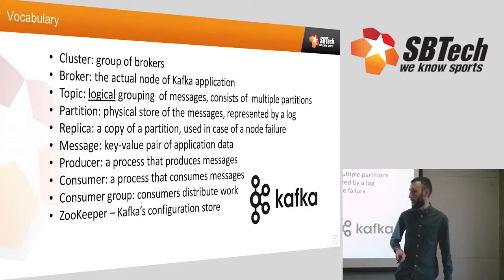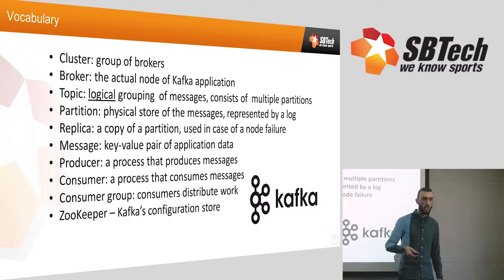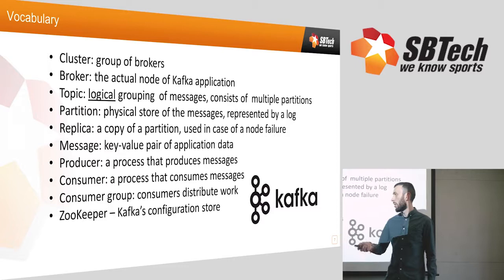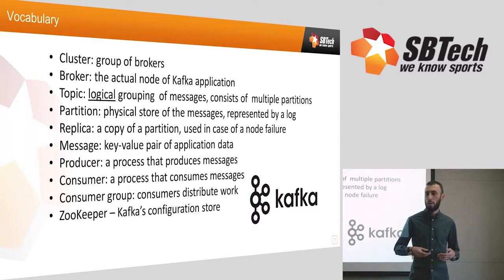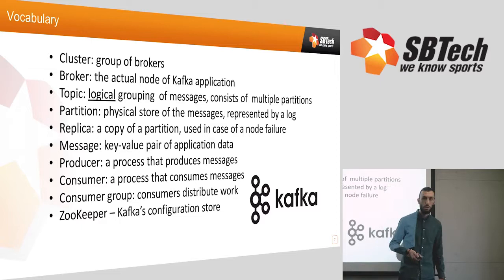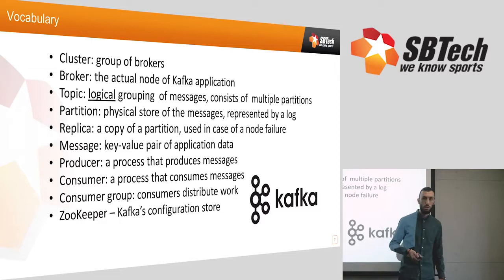A producer is the process that produces messages into Kafka, and respectively the consumer consumes them. There can be many producers and many consumers. A consumer group is a group of consumers that share work — consuming from the same topic, with Kafka ensuring they receive data equally. Zookeeper, not so important to highlight, is Kafka's configuration store. With older versions Zookeeper was more important, but right now it's storing mostly metadata.